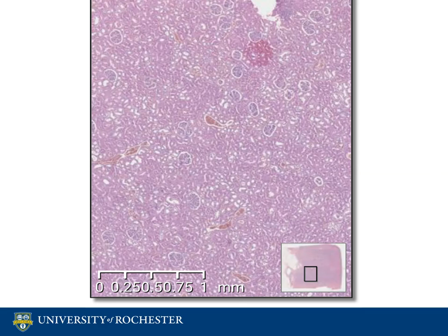The function of the kidney is to regulate body fluid volume, composition, and pH by taking metabolic wastes out of blood and excreting them outside of the body. The functional unit of the kidney is the nephron. Nephrons are tiny and composed of the renal corpuscle and renal tubule.